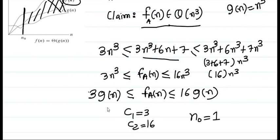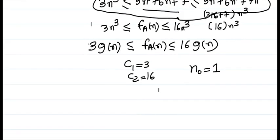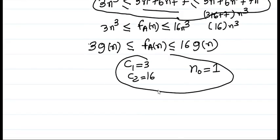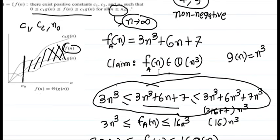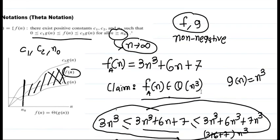We have found three positive values: c1 = 3, c2 = 16, and n₀ = 1, because after n ≥ 1 this relation is true. So we can say f_a(n) belongs to theta of n³. In other words, f_a is sandwiched between constant multipliers of g — like saying all students with marks between 85 and 100 get grade A.